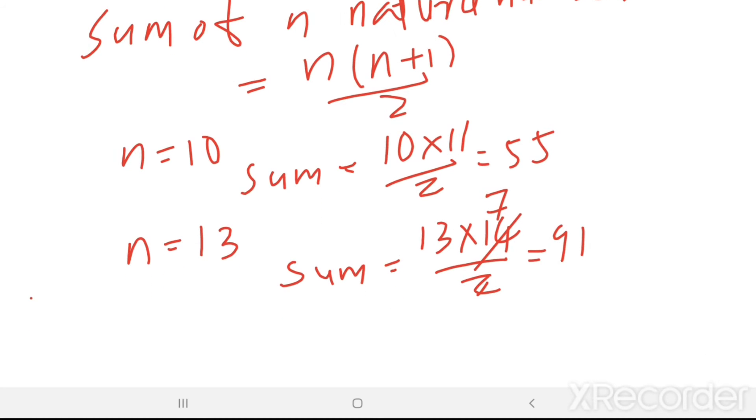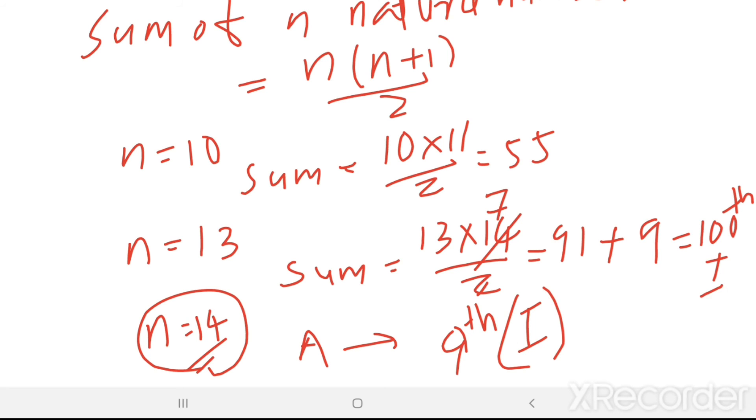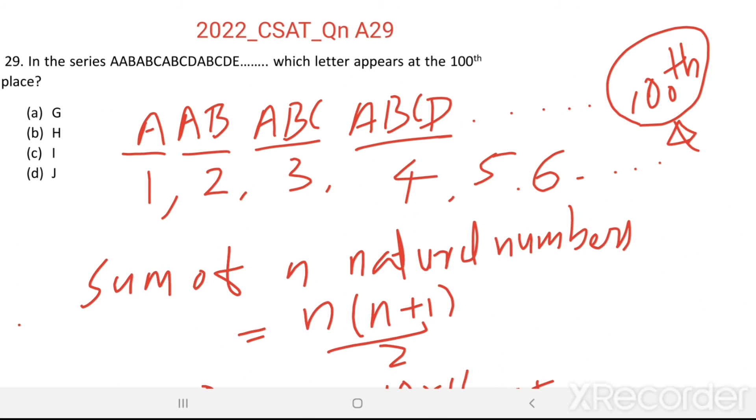So in the next group, there will be when n equal to 14, 14 more numbers will be there. So to reach 100, 9 more letters required. So from 14th group, A to 9th letter, 9th letter in the English alphabet it is I. So in the 100th place, it will be I. Option C is the right answer.